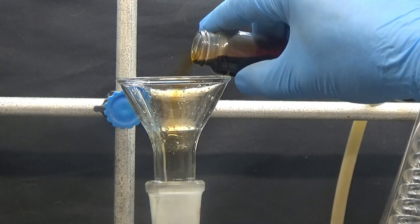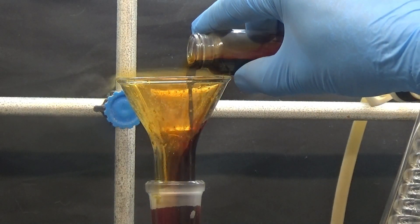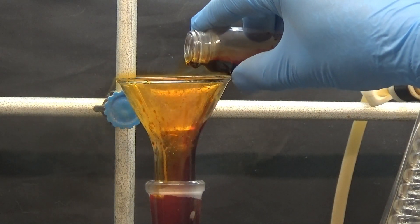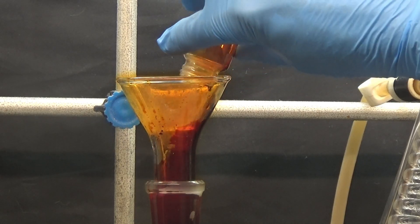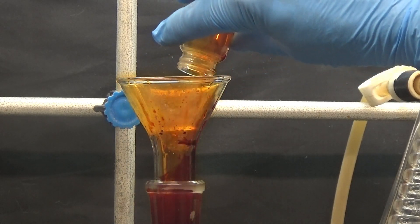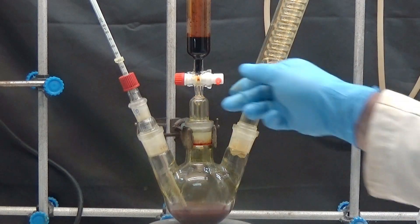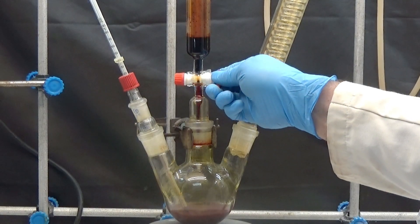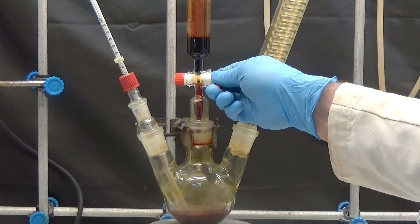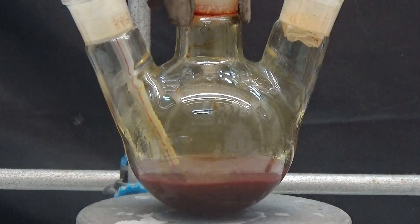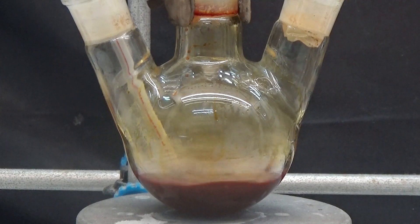We added bromine to the addition funnel. We connect the outlet of the condenser to the extraction to eliminate the hydrogen bromide vapors that are produced during the reaction. We add a small amount of bromine with stirring - the first vapors of hydrogen bromide have been observed.